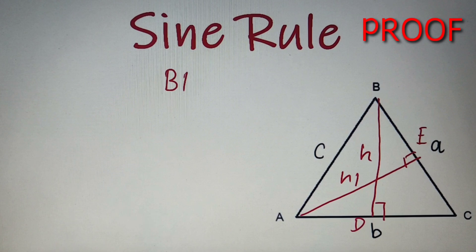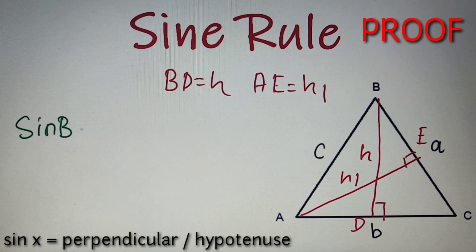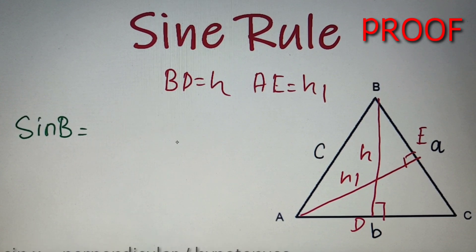The length of BD is equal to H and the length of AE is equal to H1. Now in the triangle AEB, we can apply the concept of trigonometry and calculate the value of sine B. We know that sine of any angle is equal to perpendicular by hypotenuse. So in the triangle ABE, the perpendicular is equal to H1 and the hypotenuse is C. So sine B is equal to H1 by C, which implies that H1 is equal to C sine B.